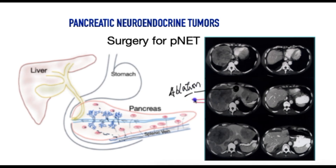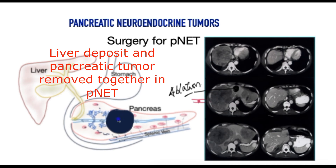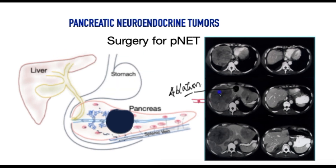The blood flow supplying large liver tumours can be stopped with radiological means called embolisation to destroy the tumour, especially if these are producing hormones. It is important to recognise the difference between common pancreatic cancer and pancreatic NETs, where both the primary tumour and metastases may be treated with surgery — something that is not the case with the more common variety of pancreatic cancer.